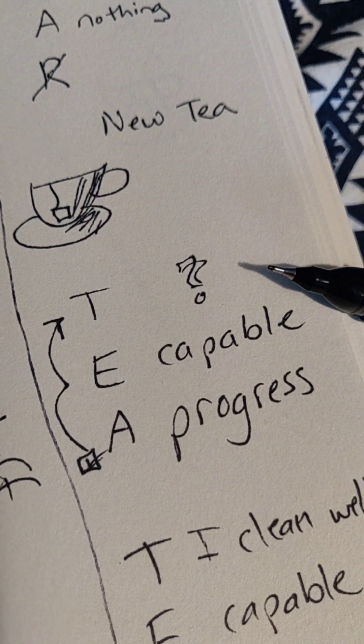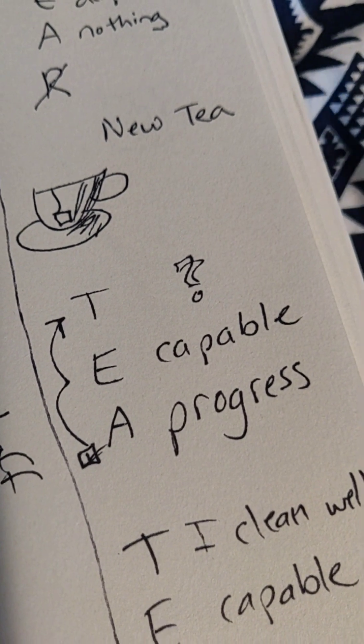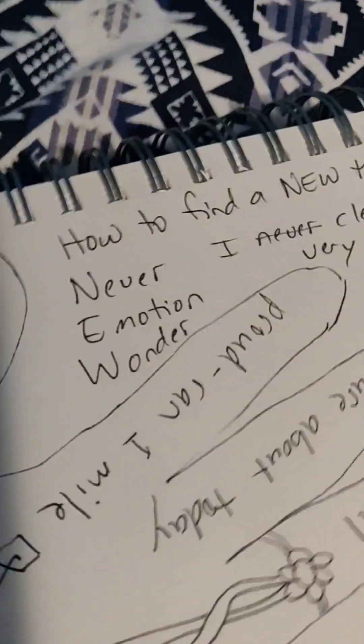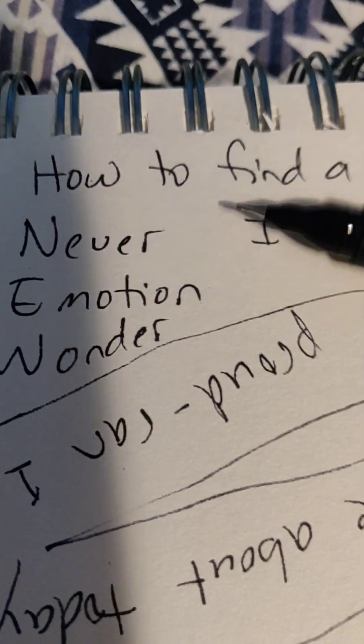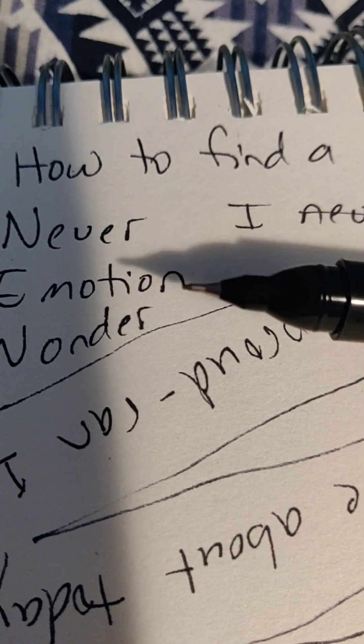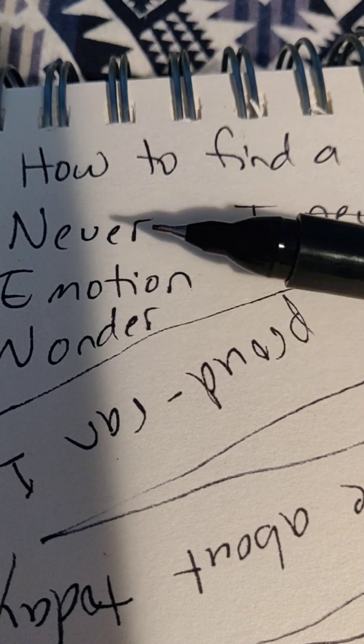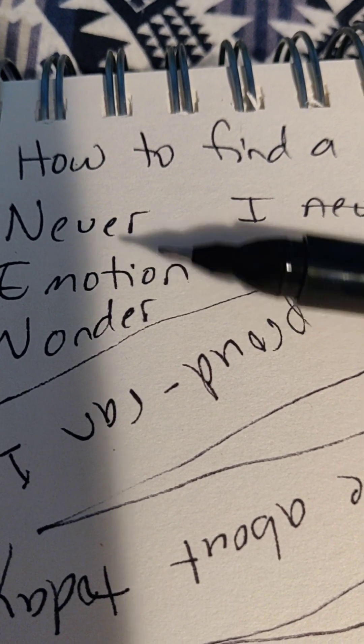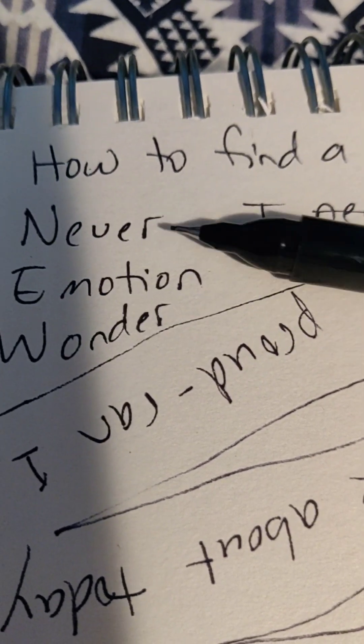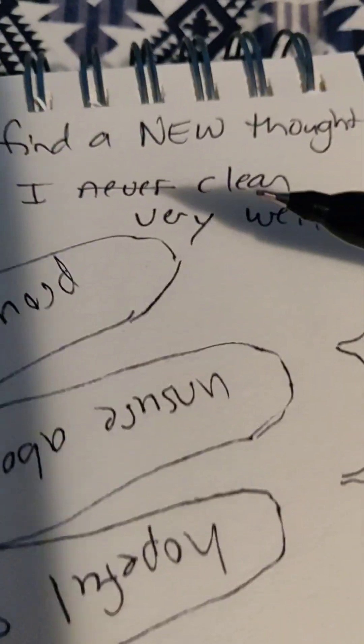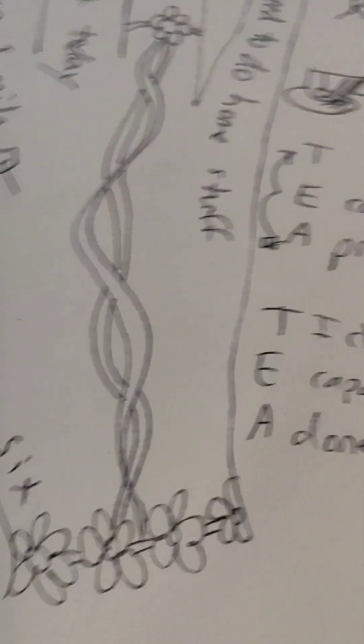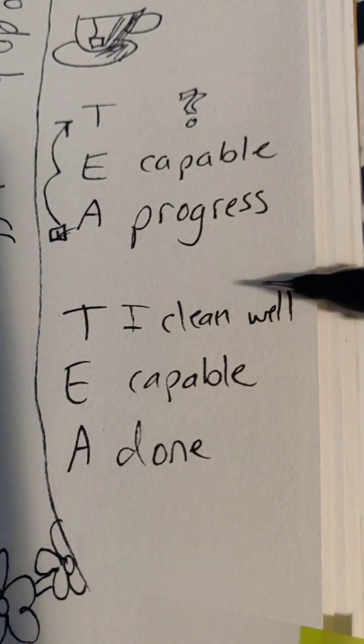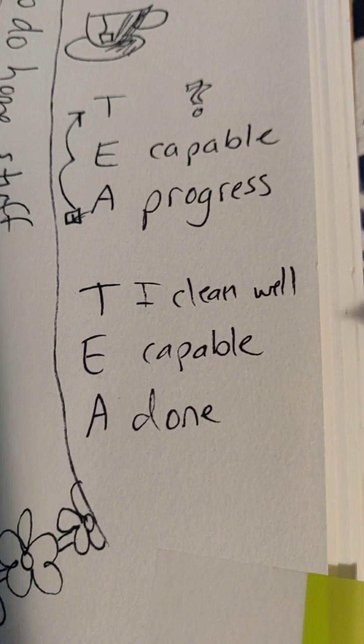So to find a new thought, you can use the 'never' trick or you can wonder something. In this case, I decided to use the never trick. 'I never clean very well' was my never thought, and then I just changed it to 'I clean well,' which makes me feel capable, and then my action would be getting things done.